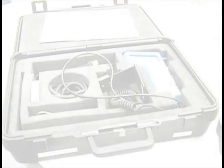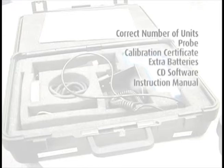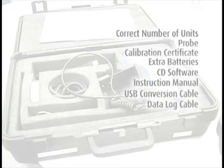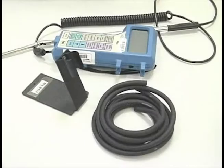When you first receive the shipment, confirm you have received everything you ordered. You should have the correct number of units, probe, calibration certificate, extra batteries, CD software, instruction manual, USB converter cable, and data log cable. On model 8386, you will also receive tubing and a stand.